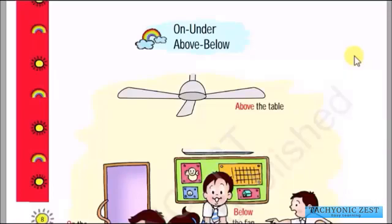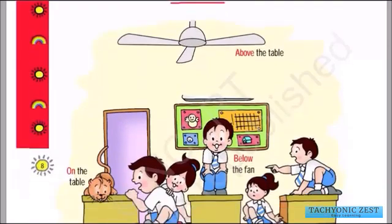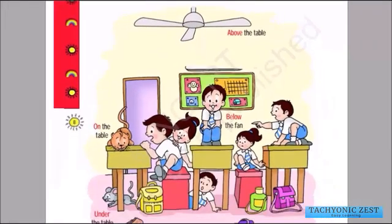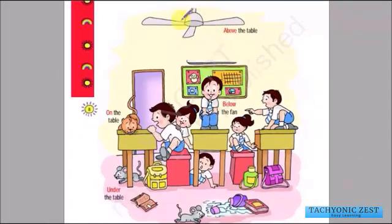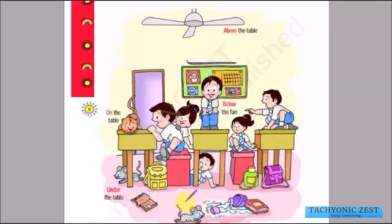Hello dear little ones, we will continue with the chapter Shapes and Space and we'll start the first topic. The first topic we'll study today is on, under, above, and below. In this diagram we have a picture of a fan, a boy, a girl, a cat, a rat, a table, and a mouse or rat.